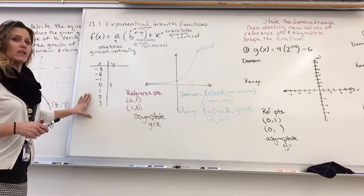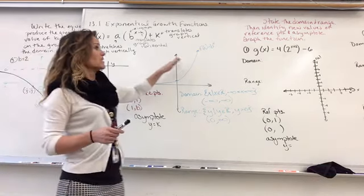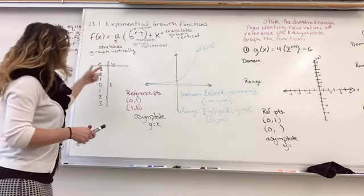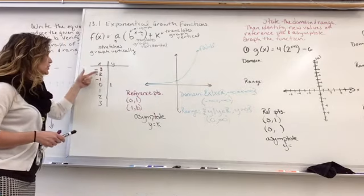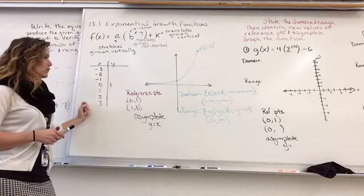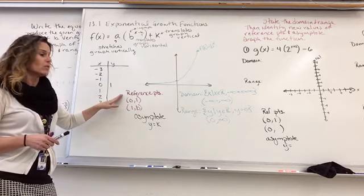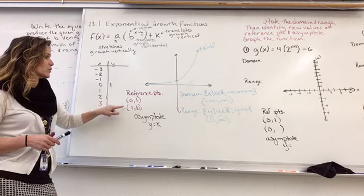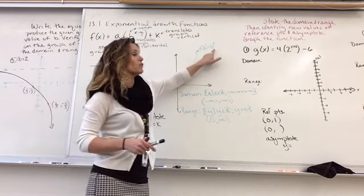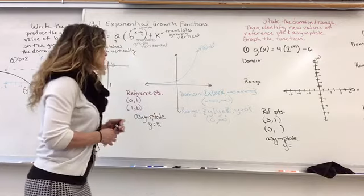We use a table of values to plug in. The parent function is B to the X. If B was a 2, we'd plug in these values — it would be 2 to whatever power is here, and we get our values. Reference points are always going to be (0, 1) and (1, B). So whatever B is, the first power is always going to give 1.